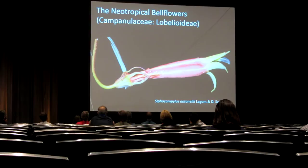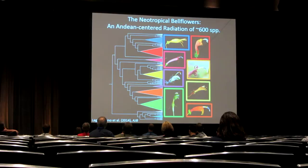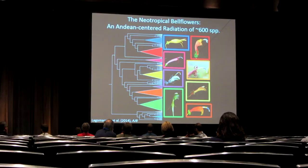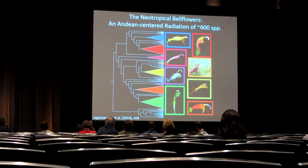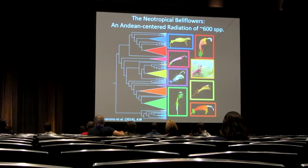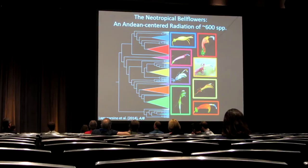I use the neotropical bellflowers in the plant family Campanulaceae to study this diversification. The neotropical bellflowers are an impressive radiation of about 600 species. They're incredibly diverse — species in this group can be everything from herbs, to vines, to shrubs, to trees. Their floral diversity is also very remarkable, and flowers in this group are adapted to pollination by insects, and especially by hummingbirds and by long-tongued nectar bats. They're a truly neotropical group from Mexico down through Brazil and Argentina, but the vast majority of their species diversity is found in Andean cloud forests, making them a perfect model system to study Andean cloud forest diversification dynamics.